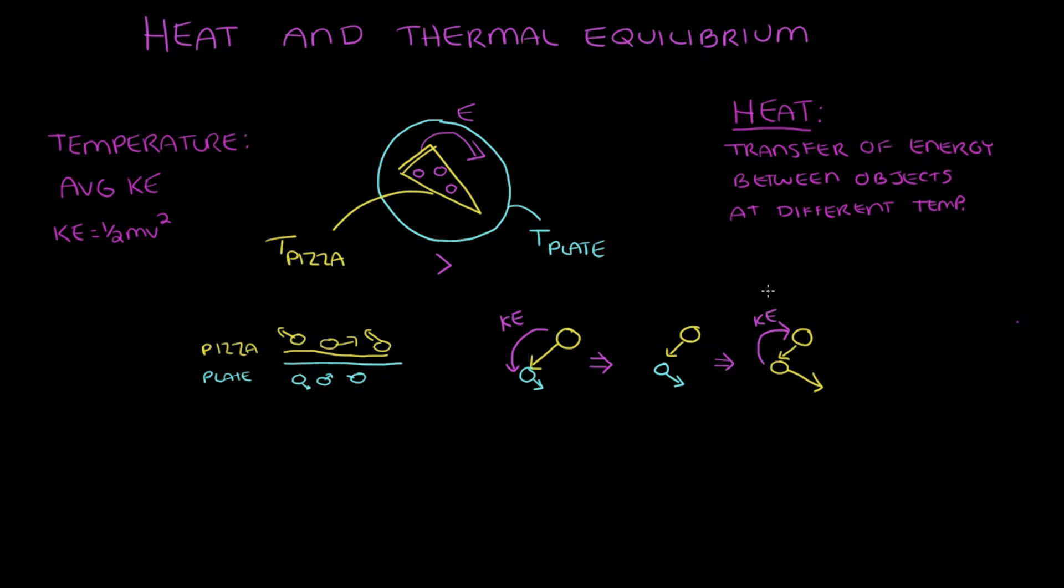The faster particle will give some energy to the slower one and in the process it slows down. And this domino effect carries through to all the particles in the system, in the plate and in the pizza, until all the particles have the same kinetic energy. And when the particles in both objects have the same kinetic energy, energy will no longer transfer between the two objects and the system has reached a state of stability. And we call this thermal equilibrium.